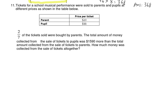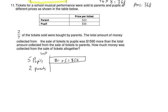The total amount of money collected from the sale of tickets to pupils was $1,590 more than the total amount collected from the sale of tickets to parents. For every 5 pupils' tickets, the cost is $11 times 5 equals $55. And 2 parents' tickets is $20 times 2 equals $40. So the difference for one set is $55 minus $40 equals $15.